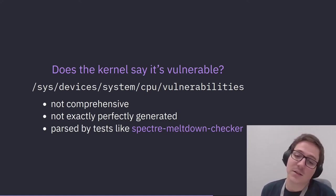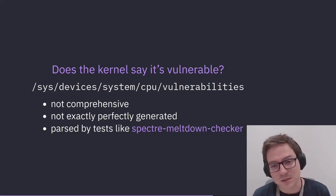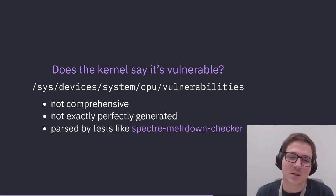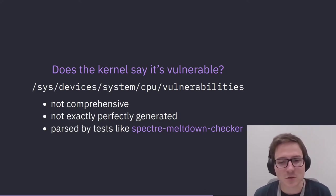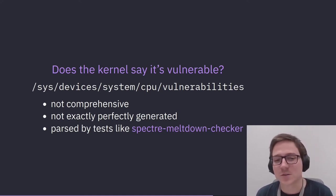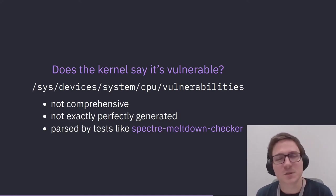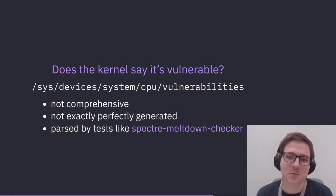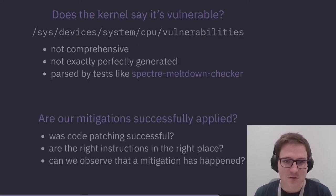There are things that you could consider tests. One great one is the Spectre-Meltdown Checker, which is an awesome script. It mostly supports Intel but will also work on AMD and ARM. It'll look at a bunch of things including SysFS, but also what's in your kernel, your kernel version, what microcode you're running, to figure out: out of all of these many CVEs, which ones are you potentially vulnerable to? And it'll suggest how to fix them. Very cool.